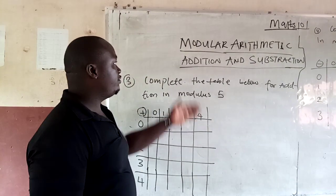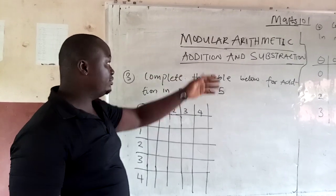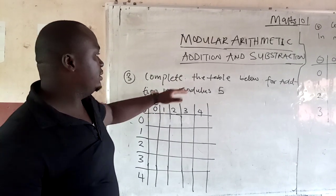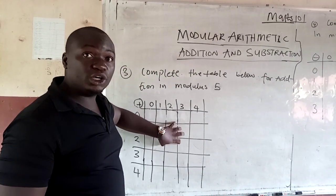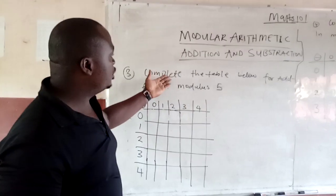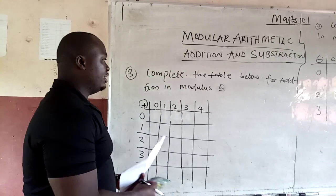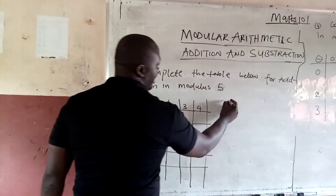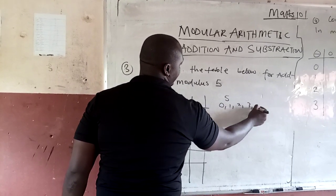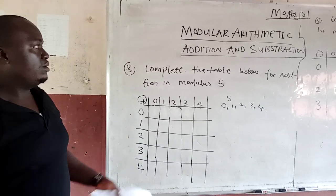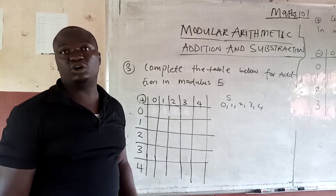This is the continuation of addition and subtraction under modular arithmetic. Some people see this kind of question in a tabular form. The question is: complete the table below for addition modulus 5. Remember that we have already been restricted to modulus 5, and our range is 0, 1, 2, 3, 4. If you are not with me, part 1 is already on our channel. This is part 2, under addition and subtraction.